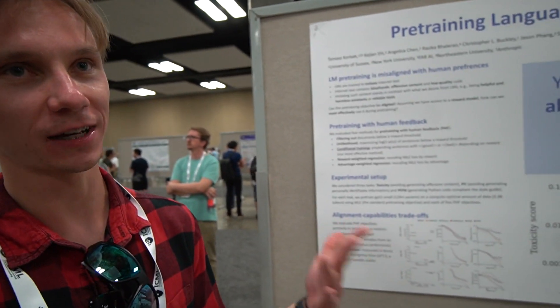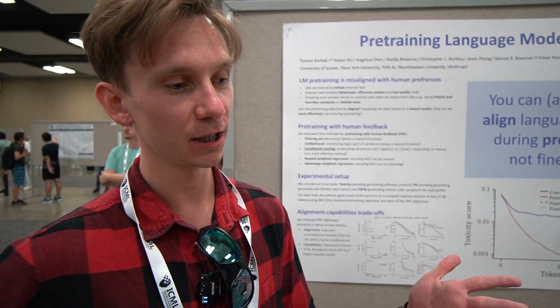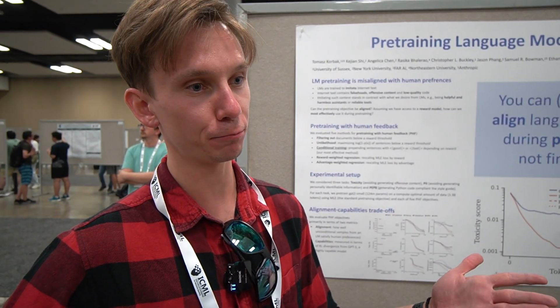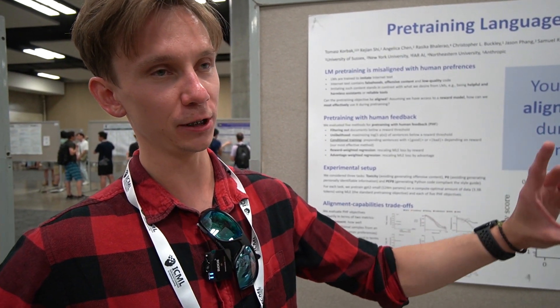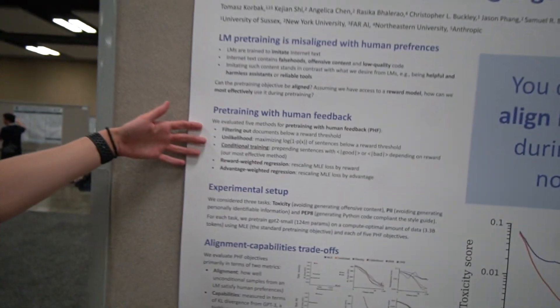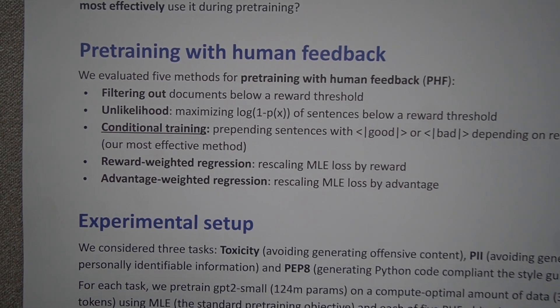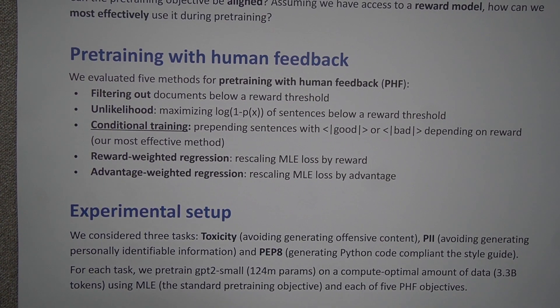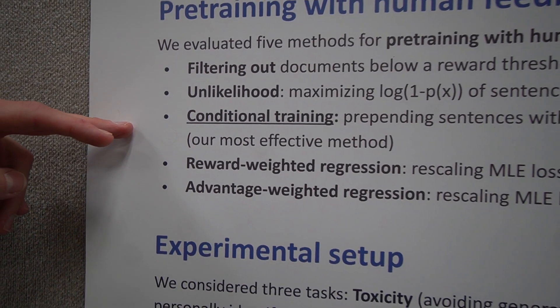The idea is that you assume access to some reward model that you can use to annotate your pre-training documents, so that you not only have your pre-training documents but also some annotation of reward for them. We tried five methods in the paper that use this scheme when you have access to reward values for pre-training data, and the conditional training method was identified as the best.